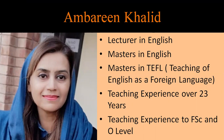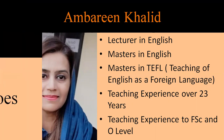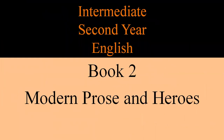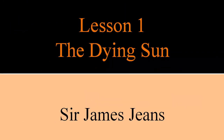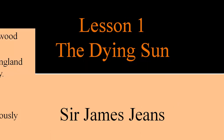The Dying Sun is lesson one of English book two of intermediate second year class. This book two is about modern prose and heroes. Lesson number one, The Dying Sun, is written by Sir James Jeans.